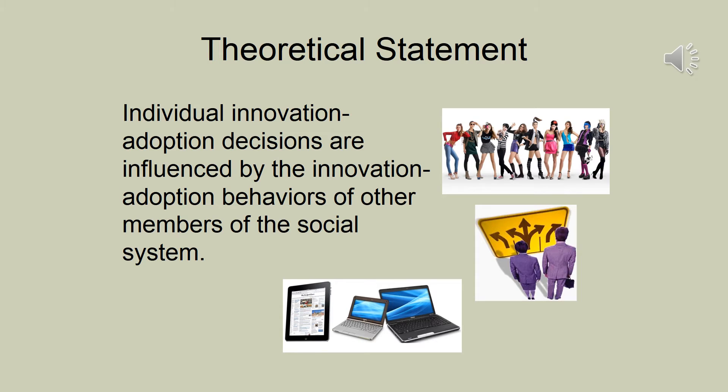When examining a theory, it's important to look at any theoretical statements. For the diffusion of innovations theory, a major statement is that individual innovation adoption decisions are influenced by the innovation adoption behaviors of other members of the social system. This makes sense if you think about things like computers, smartphones, and fashion — people are more likely to adopt something once they've seen others in their social system adopting it.